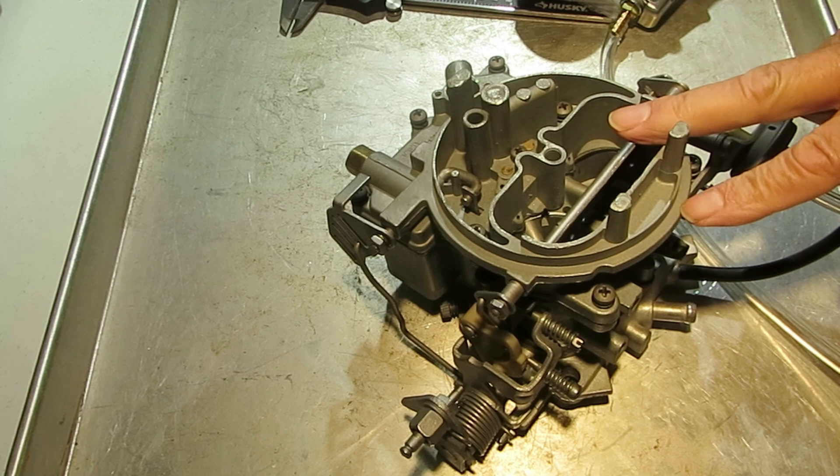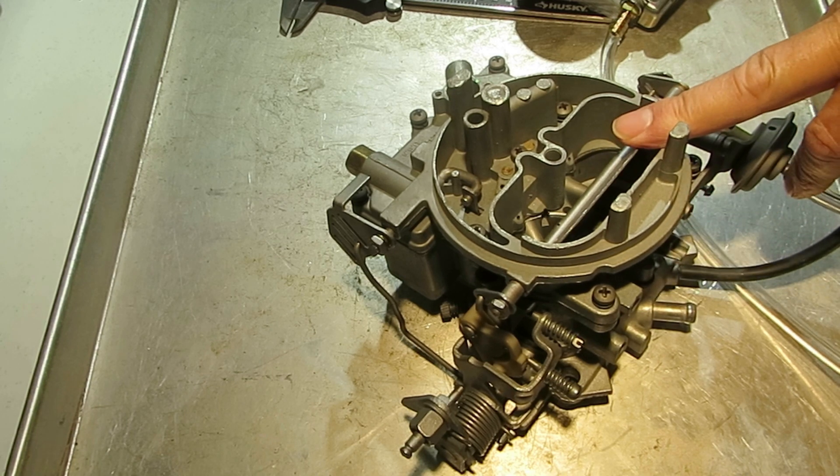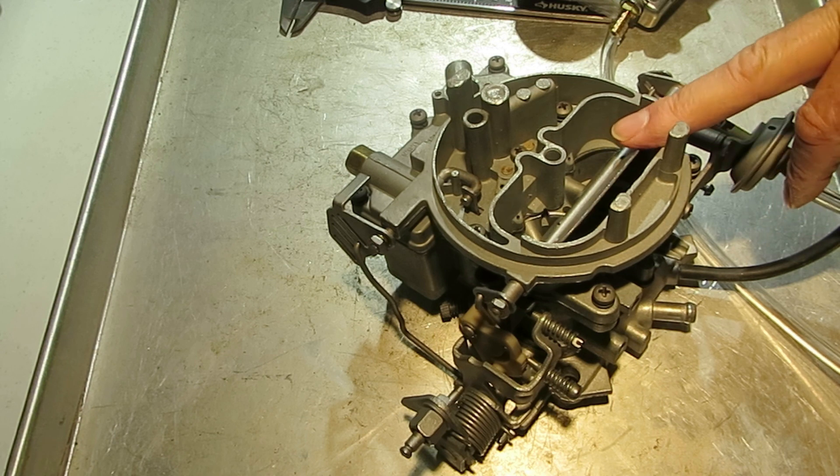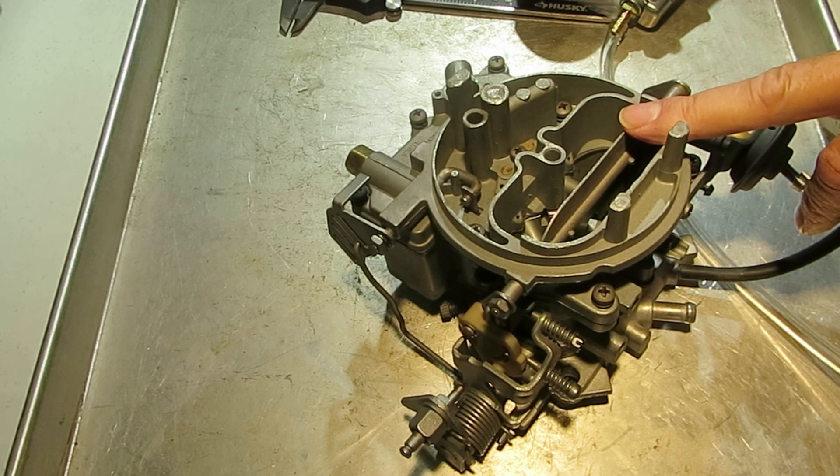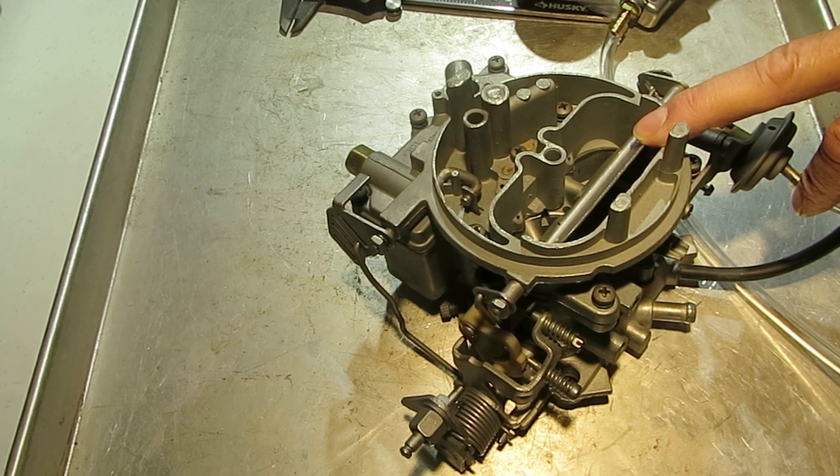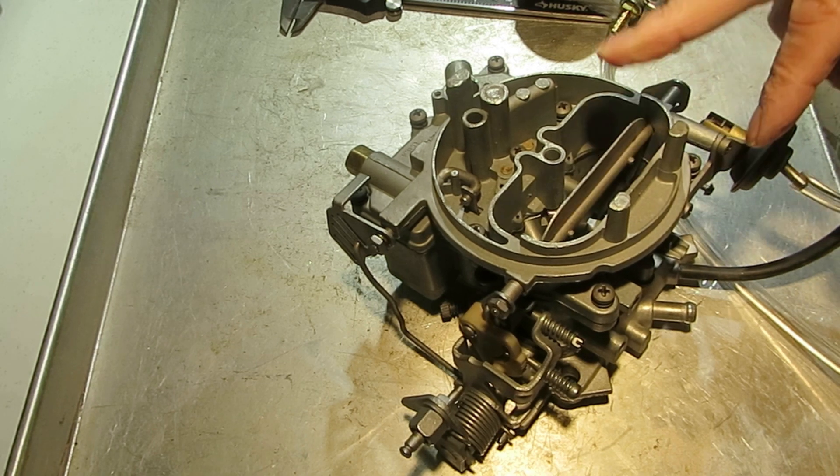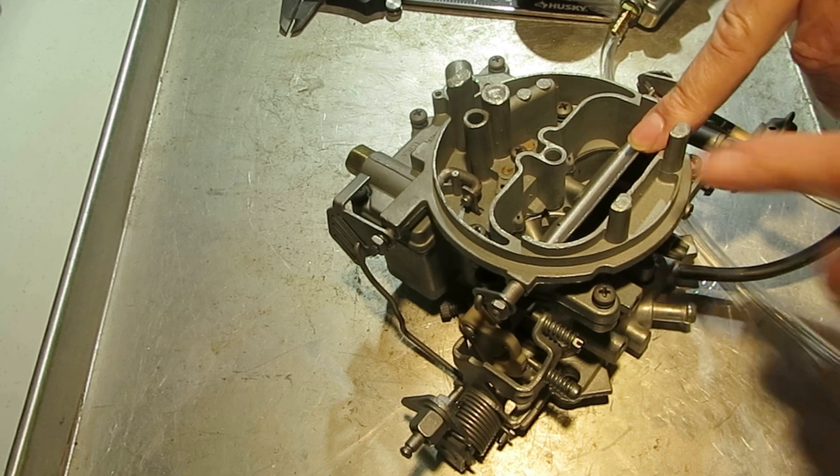The vacuum brake is used to keep the choke slightly open when you're throttling it up when it's cold. Otherwise you'll get too much choking and kill your engine. If that's happening then you might check this out and see if you got a gap here.